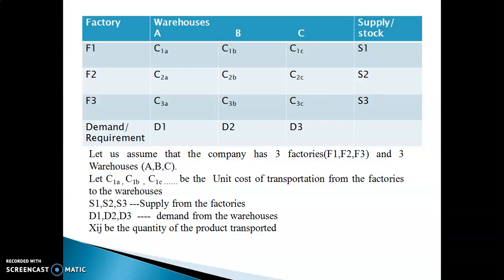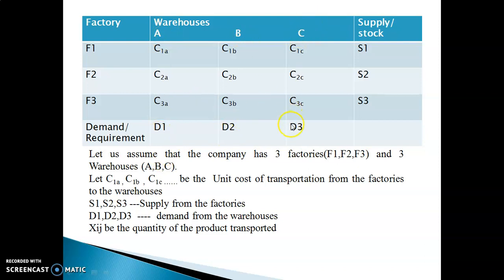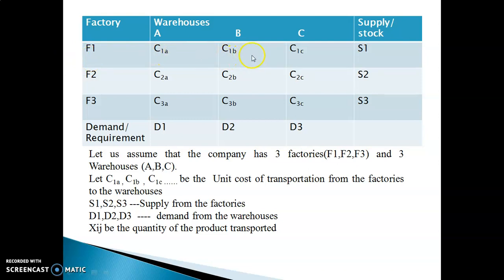Now how can we formulate the transportation model? Here is a table with three factories F1, F2, F3 and warehouses A, B, C. The total available supply at factory F1 is S1, at factory F2 is S2, and at factory F3 is S3. Similarly, the demand of warehouse A is D1, demand of B is D2, demand of C is D3. C1A represents the unit cost of transporting one unit from factory F1 to warehouse A. Similarly, C1B represents the unit cost from factory F1 to warehouse B. These are all the unit transportation costs from the factories to the respective warehouses, along with the supply and demand values.